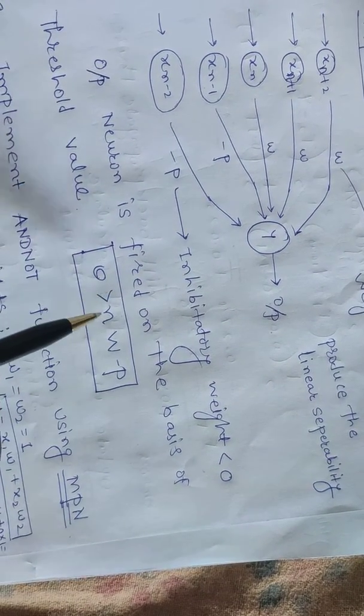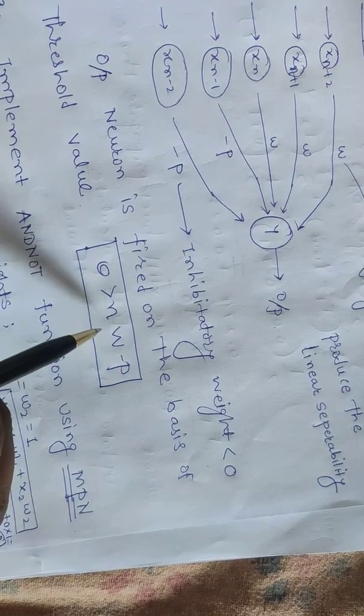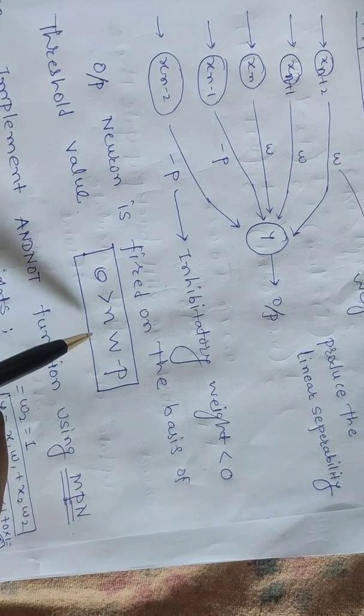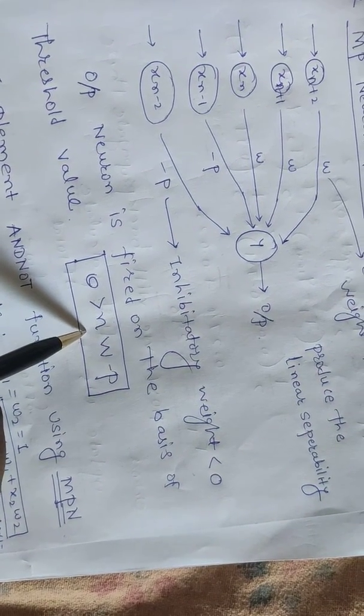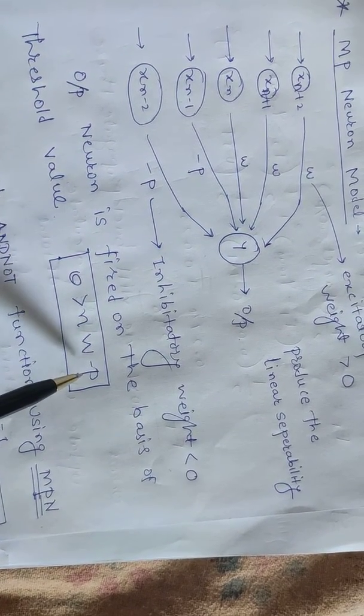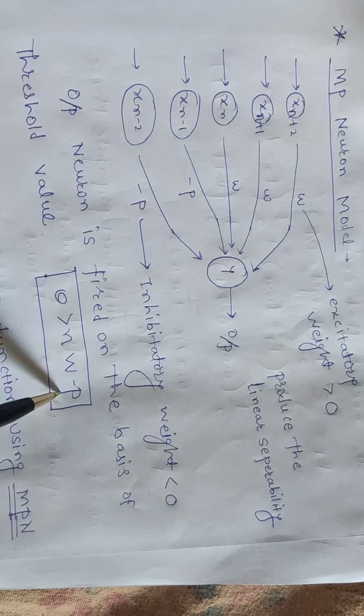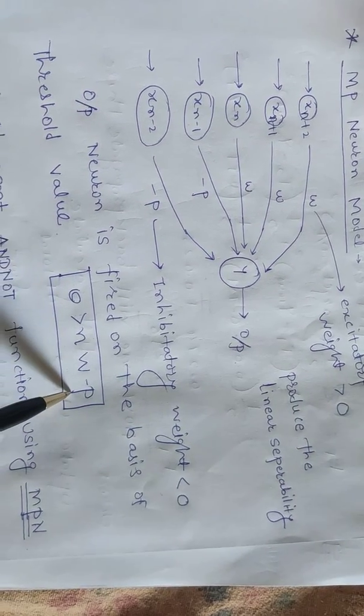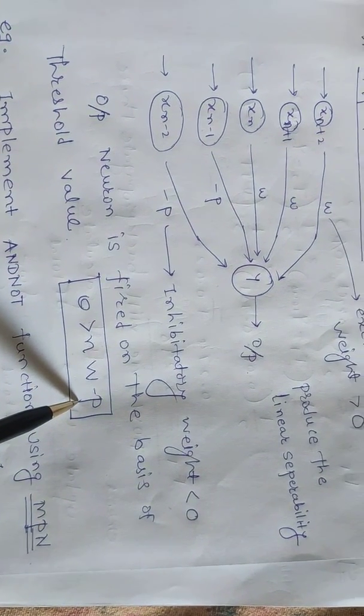The threshold value should be greater than n times w minus p. N indicates the number of inputs, w indicates the excitatory weights, and p indicates the inhibitory weights which is less than zero.